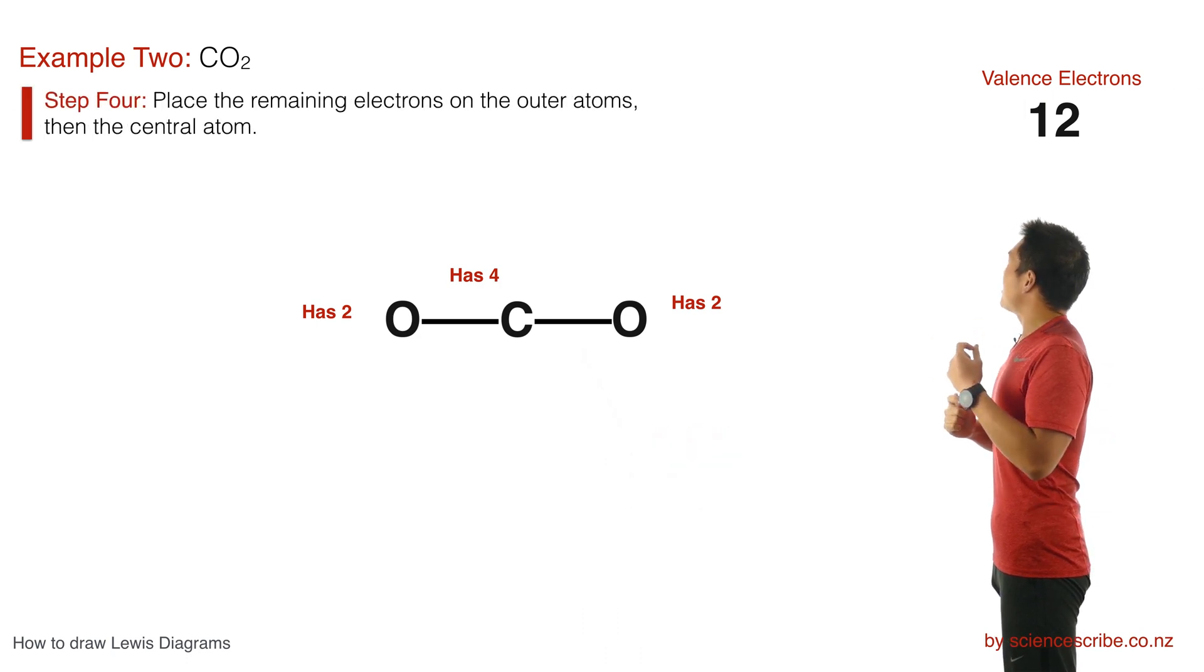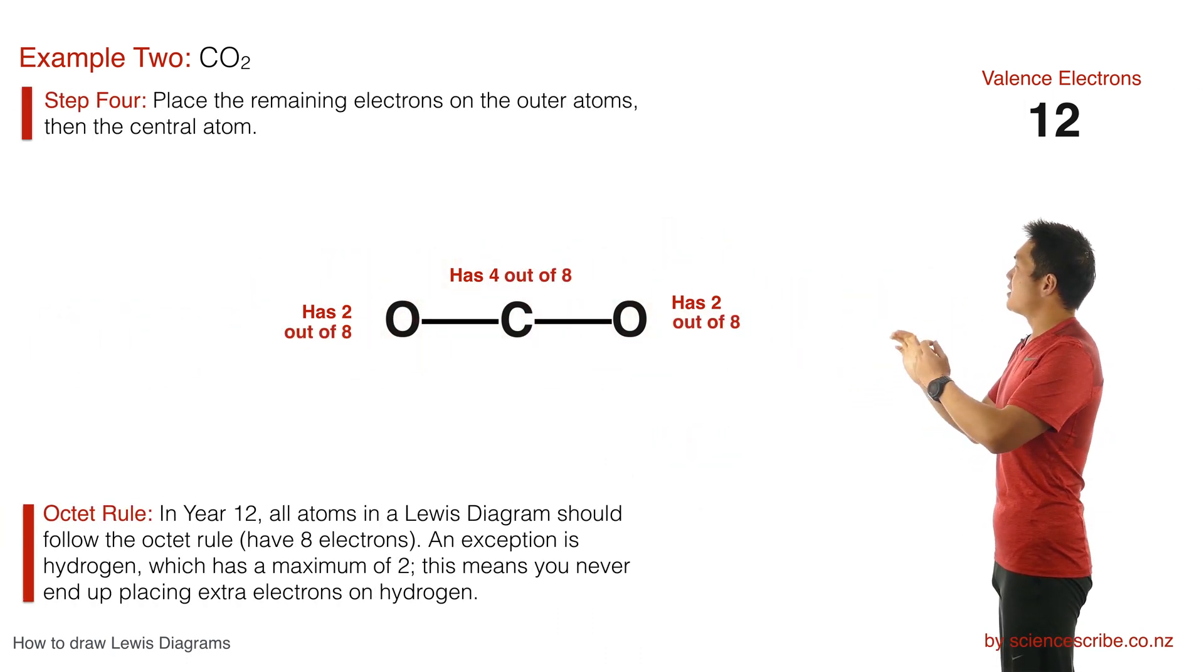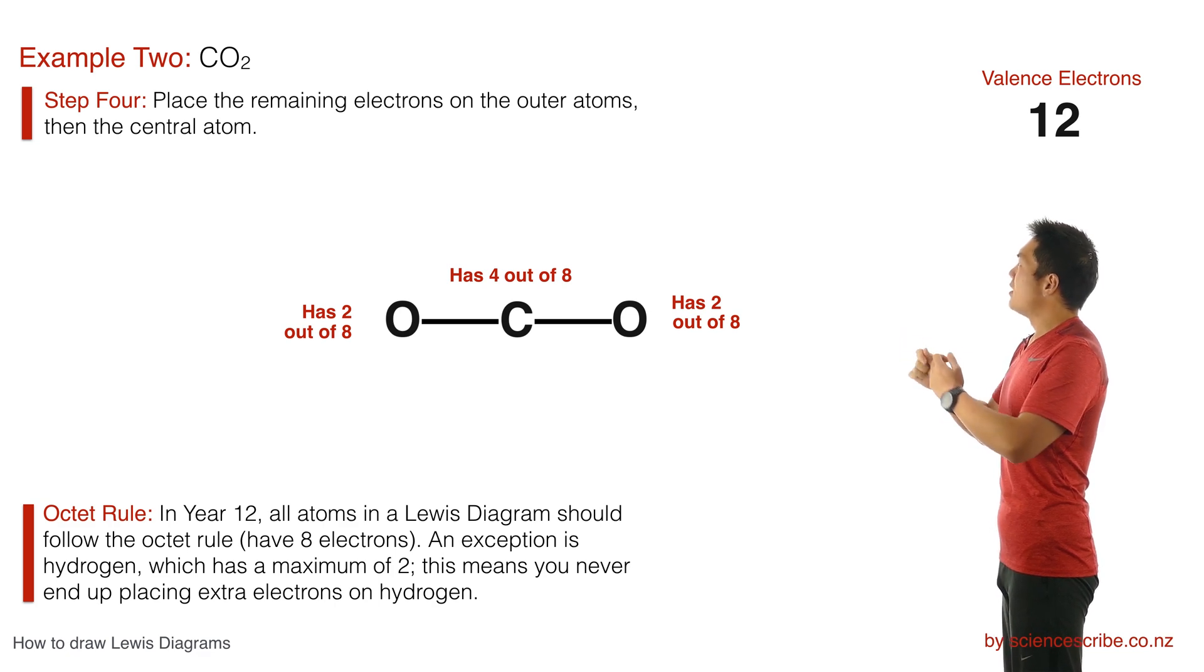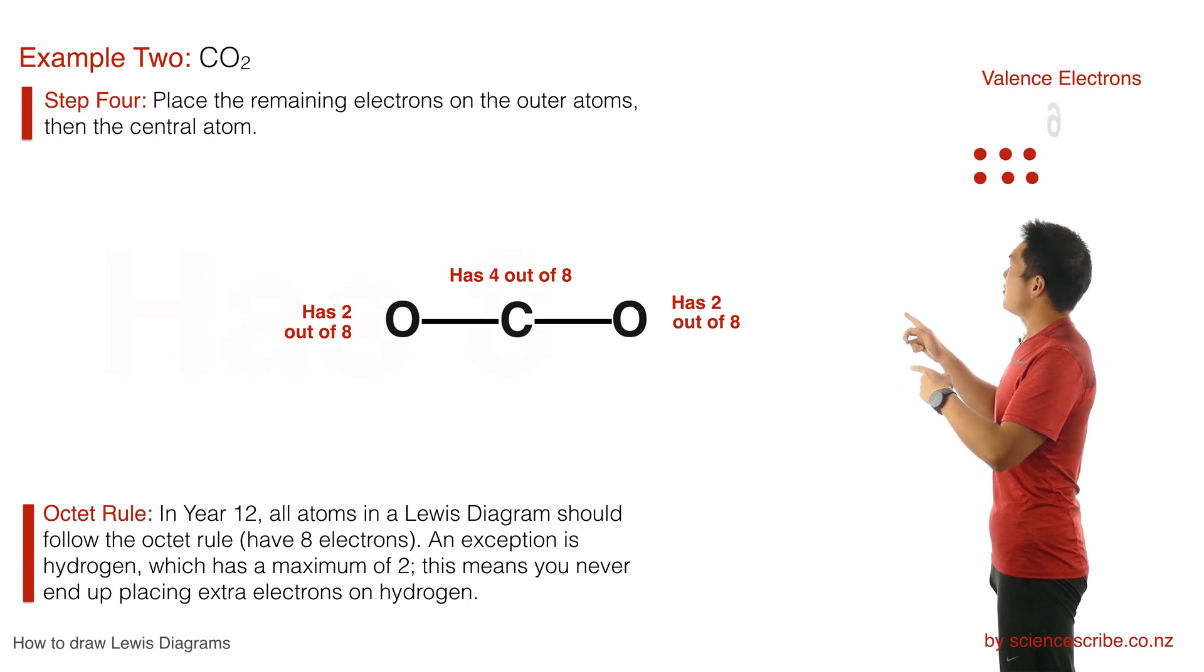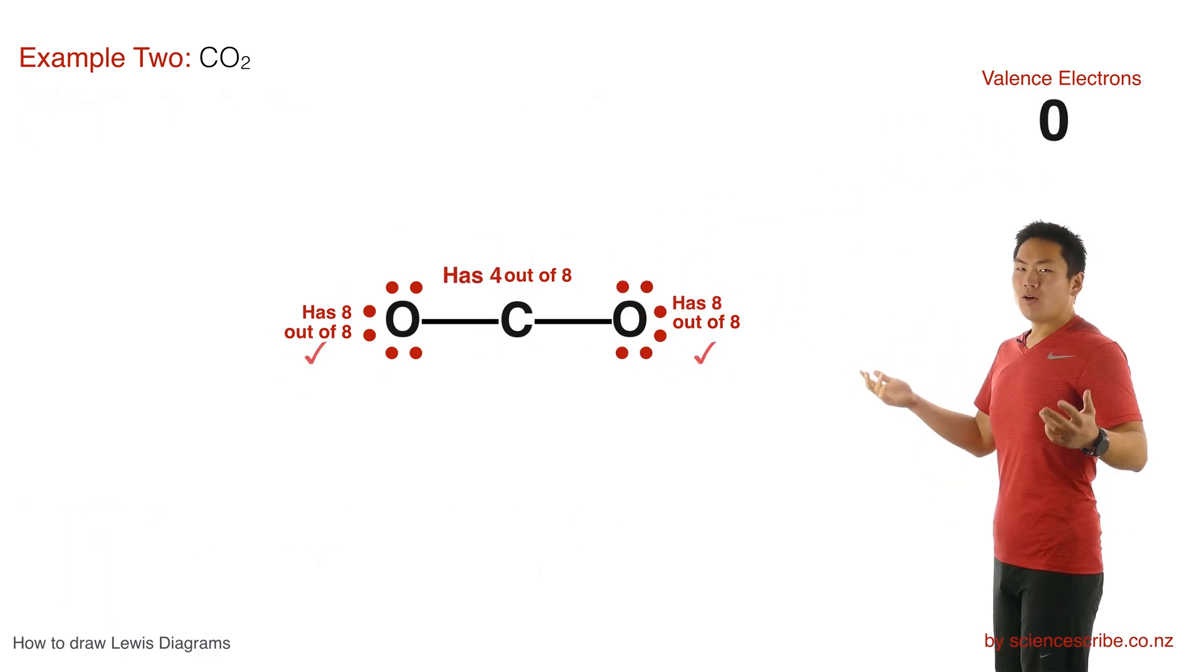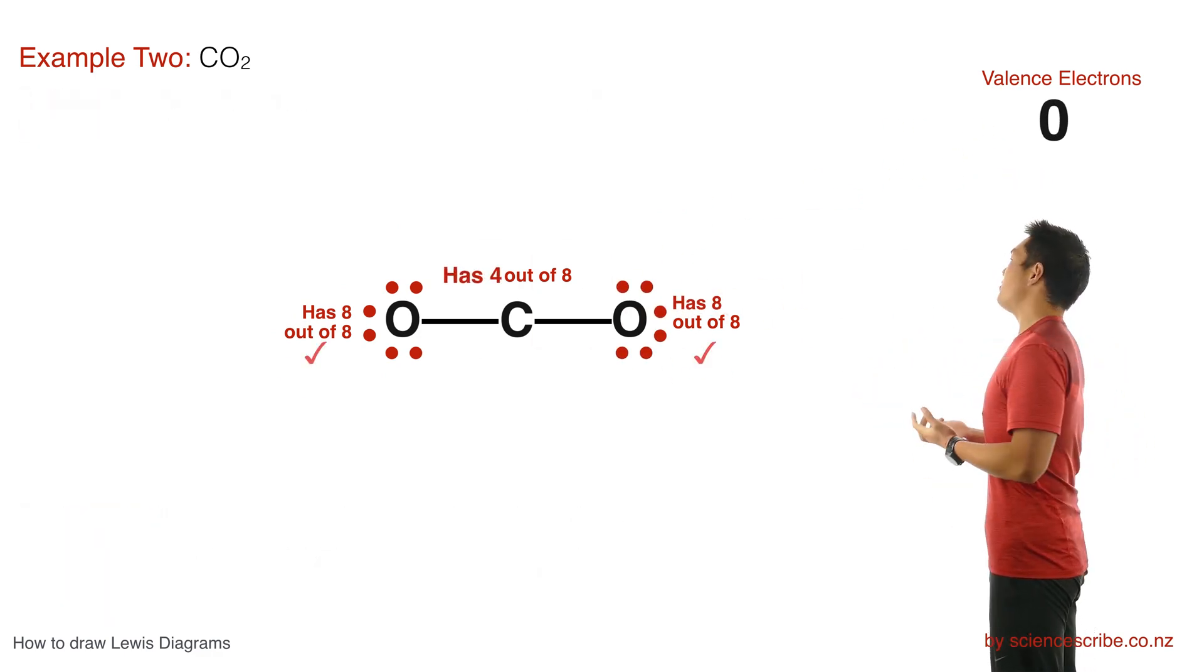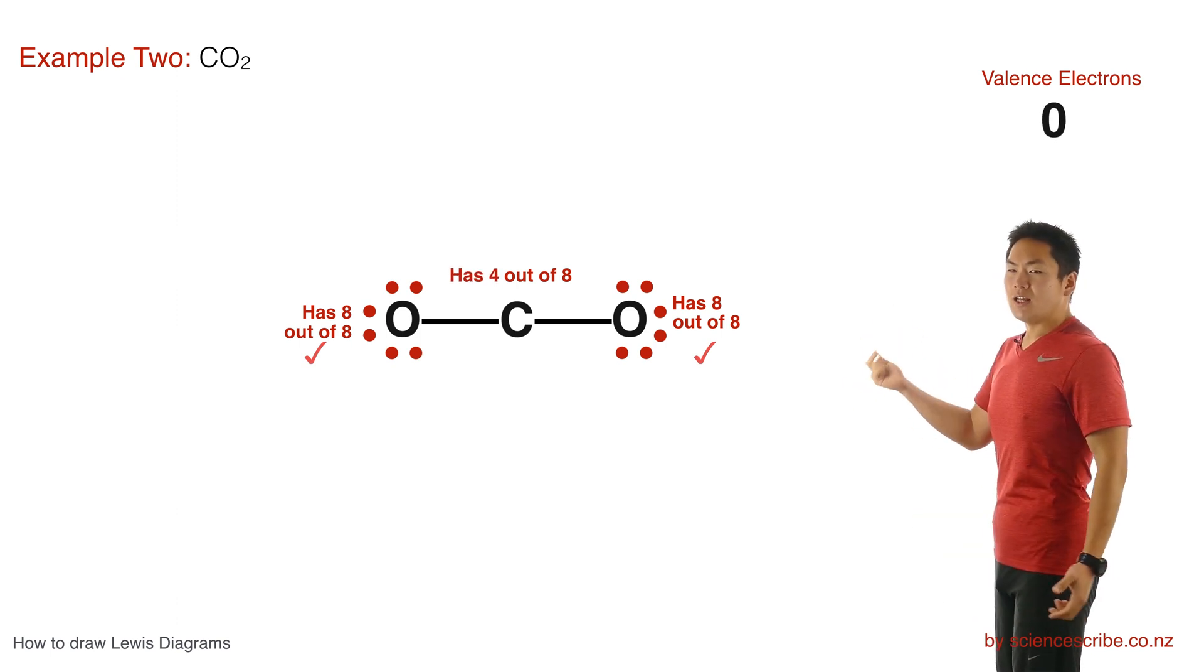Now again just like before, I need to place the remaining electrons on the outer atoms and then the central atom using the octet rule. So oxygen's got two out of eight, carbon's got four out of eight. So with my 12 remaining we're going to place them on the outer atom so there's oxygen and there's the other oxygen done. This means that I've got no more electrons left, but we've got a problem now because carbon only has four, but it still needs four.